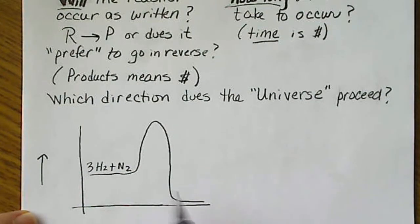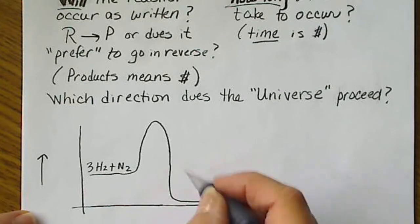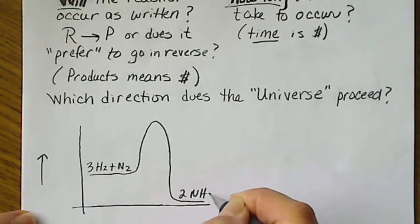There's some activation energy that has to be overcome there, but ultimately that reaction goes downhill in energy. So we end up with 2NH3.